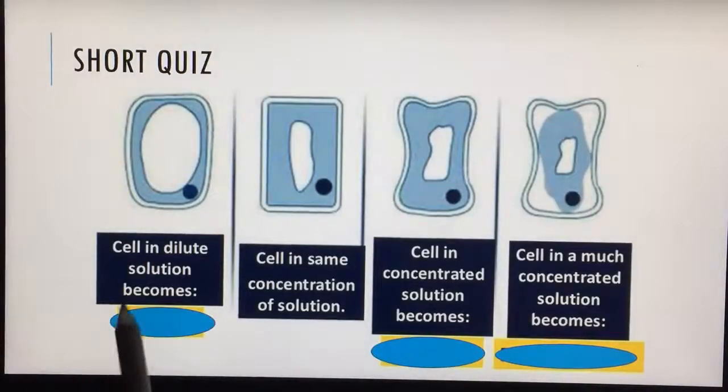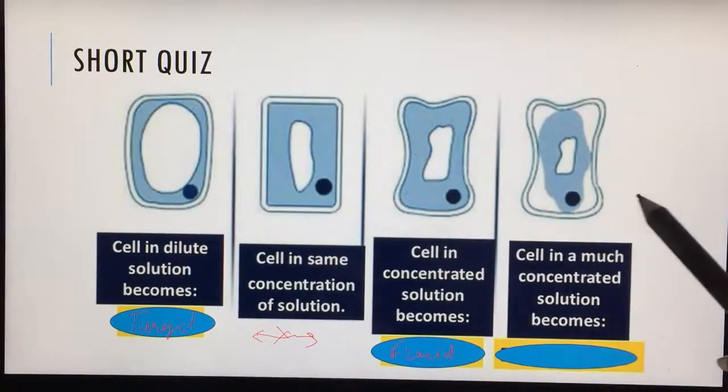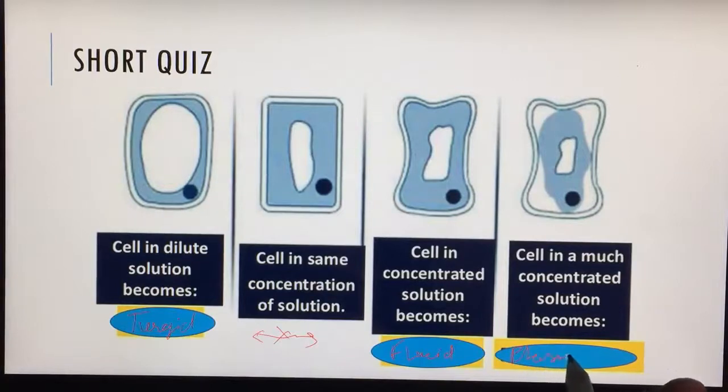Let's take a short quiz. Cells in dilute solution - what do they become? They become turgid. Cells in the same concentration solution do not change in volume. No change. And cells in concentrated solution become flaccid. What happens to the cells when they are kept in much more concentrated solution? They become plasmolyzed.